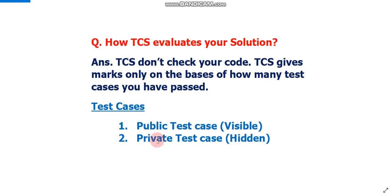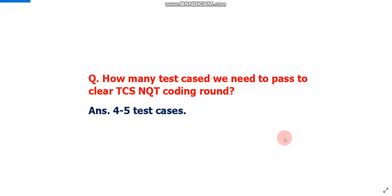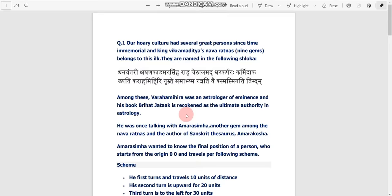There are two types of test cases: public test cases, which are visible, and private test cases, which are hidden. Using this trick we can pass all the public test cases. You need to pass at least four or five test cases to clear the TCS NQT coding round cutoff.